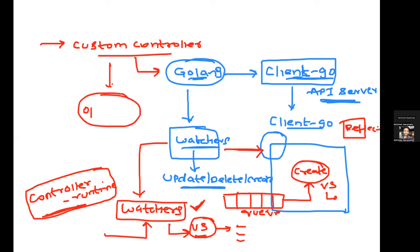If you want to write operators, you can use the Operator SDK — but the difference between operators and controllers is not today's topic. Most DevOps engineers will not write custom controllers or CRDs, but if you are in a Kubernetes developer role, you might need to know all of these things. Writing a custom resource definition itself is not difficult. I'll put a link to a sample Kubernetes custom controller in the description.